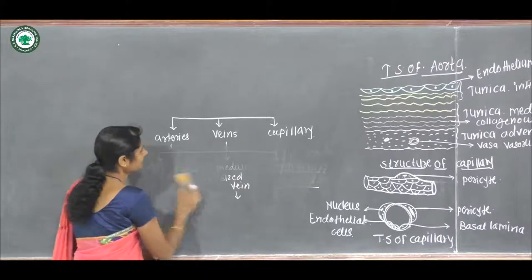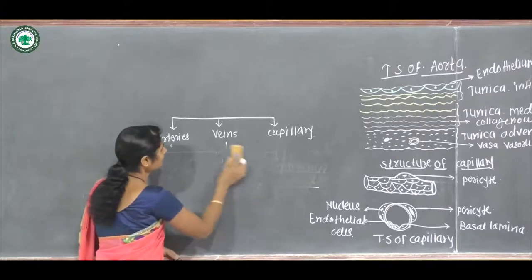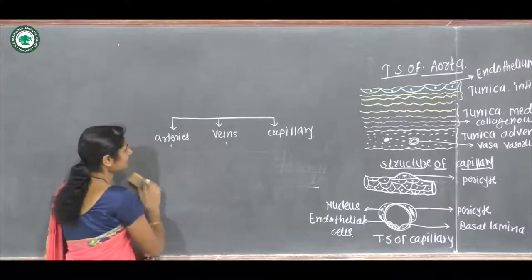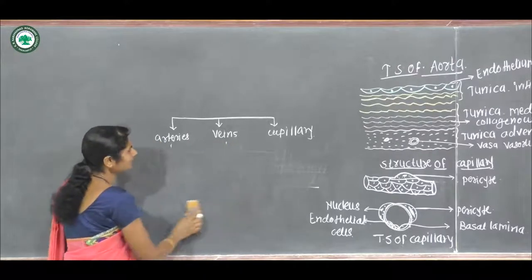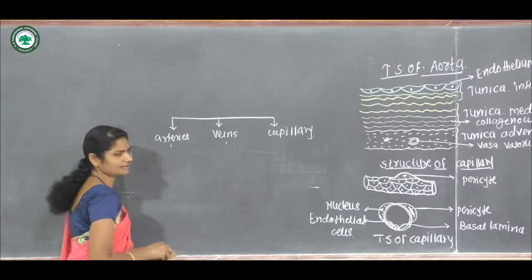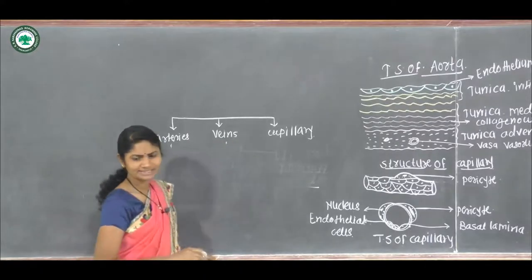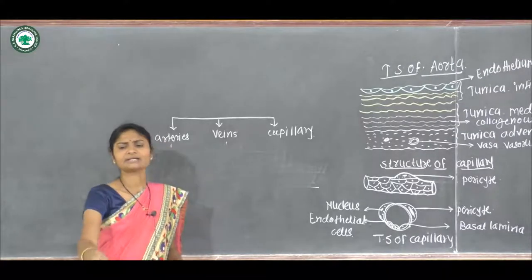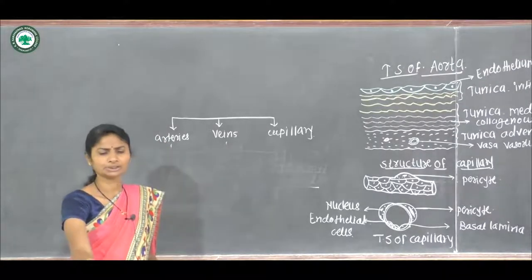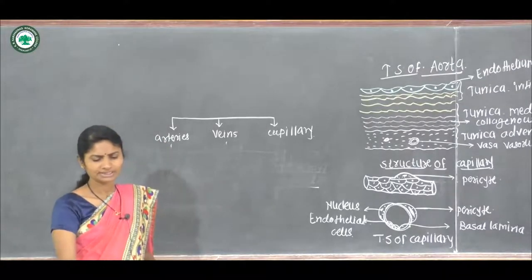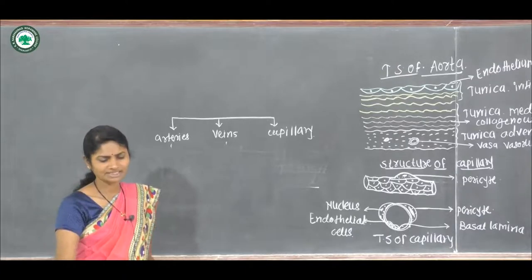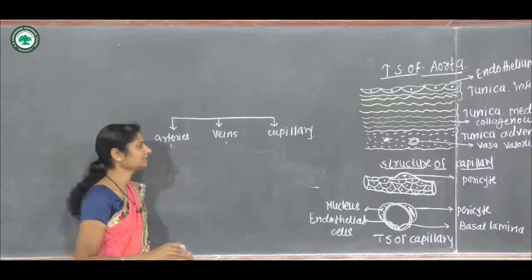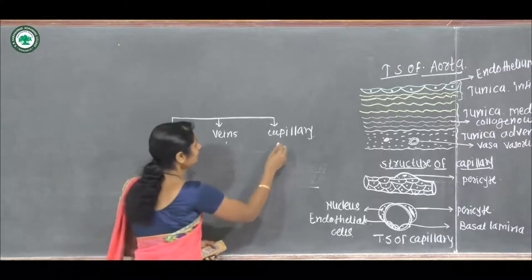The next part is capillaries. Capillaries have a very small diameter and are divided into three types: continuous capillaries, fenestrated capillaries, and sinusoidal capillaries.